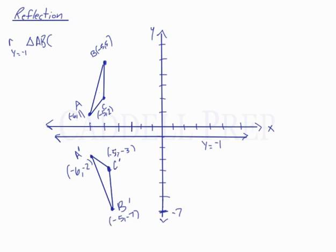So a quick sketch easily helps us figure out the coordinates for the image if we reflect triangle ABC over the line y equals negative 1.